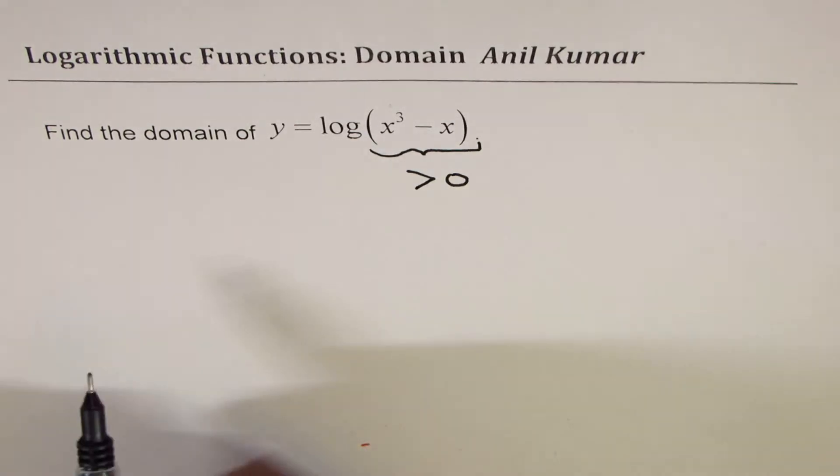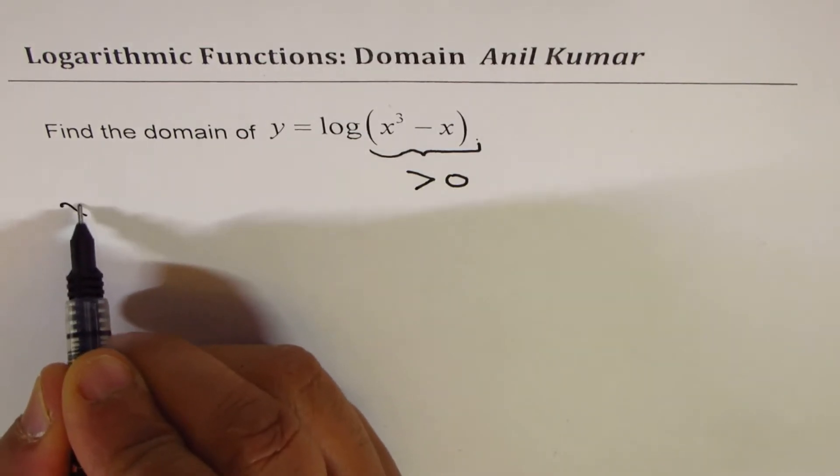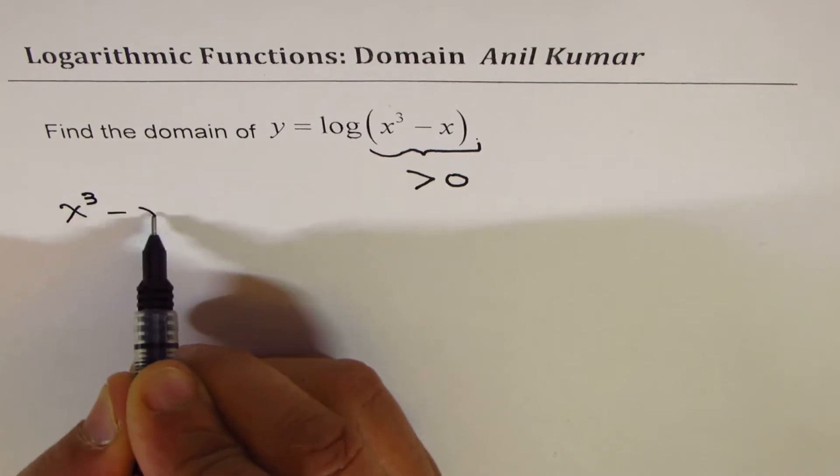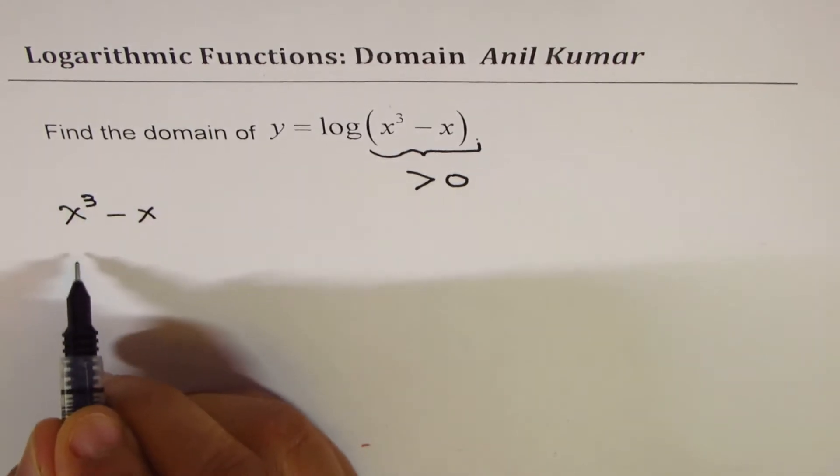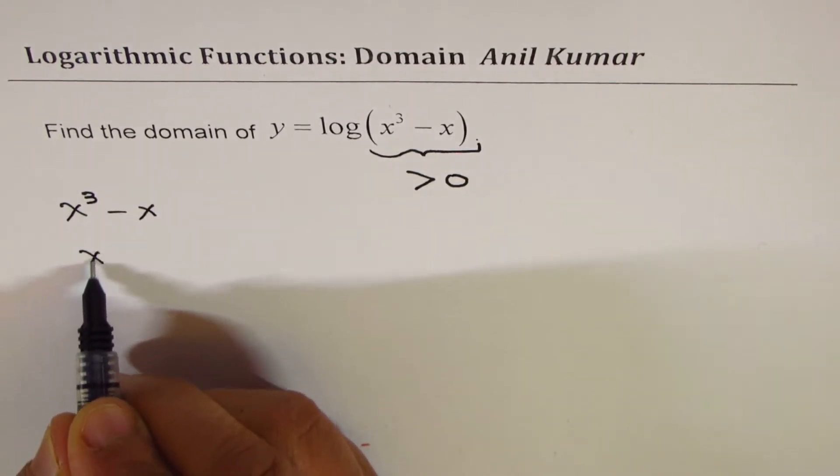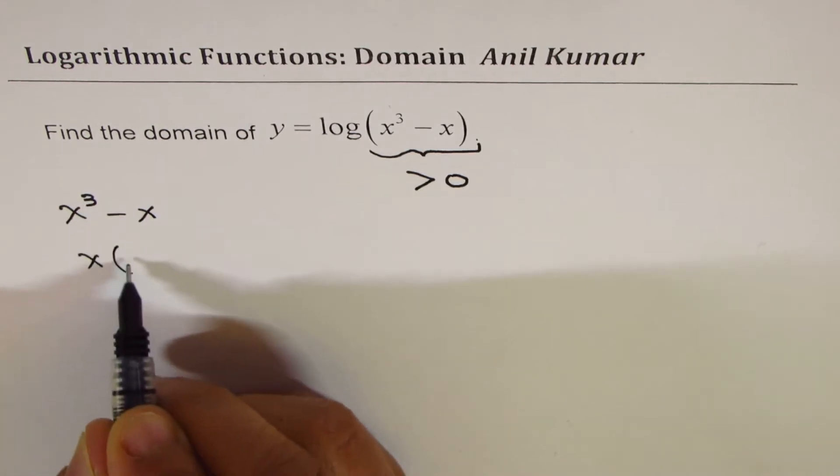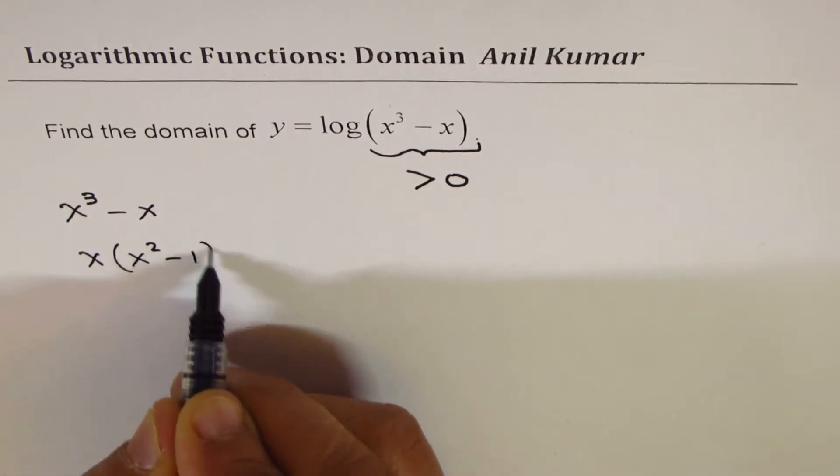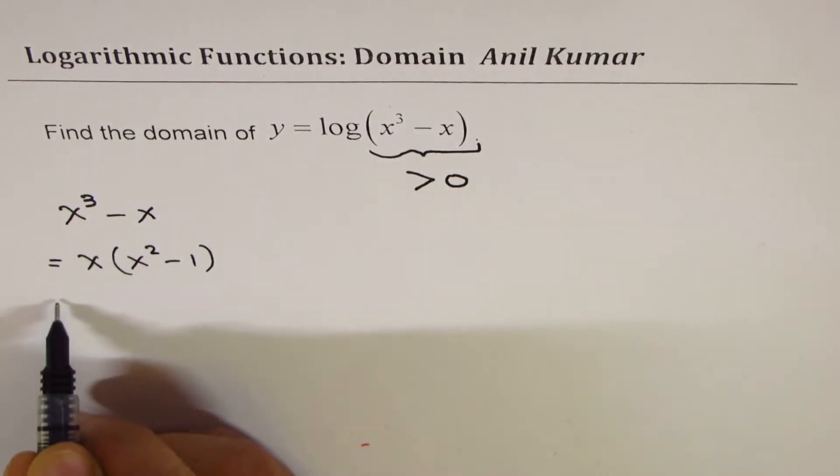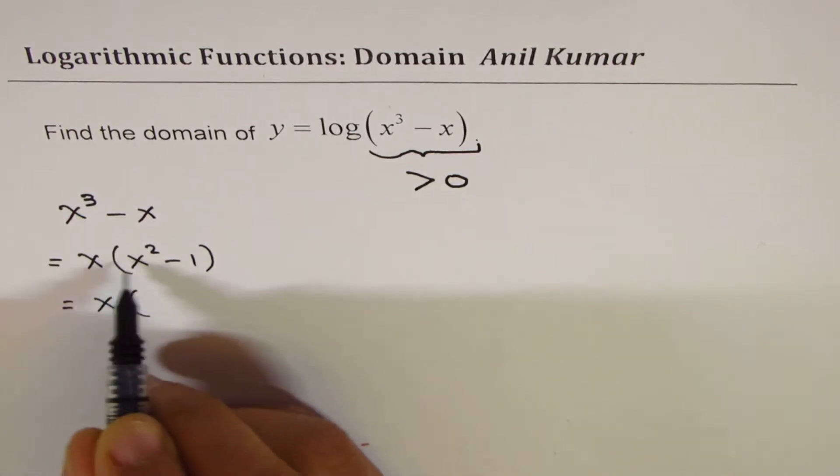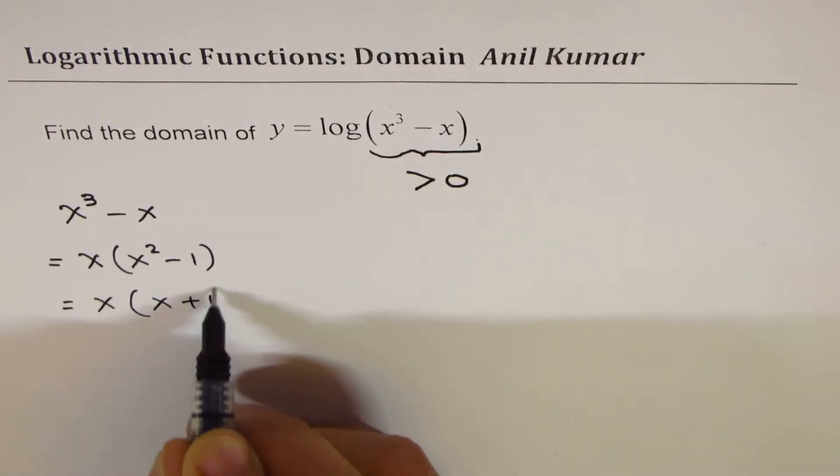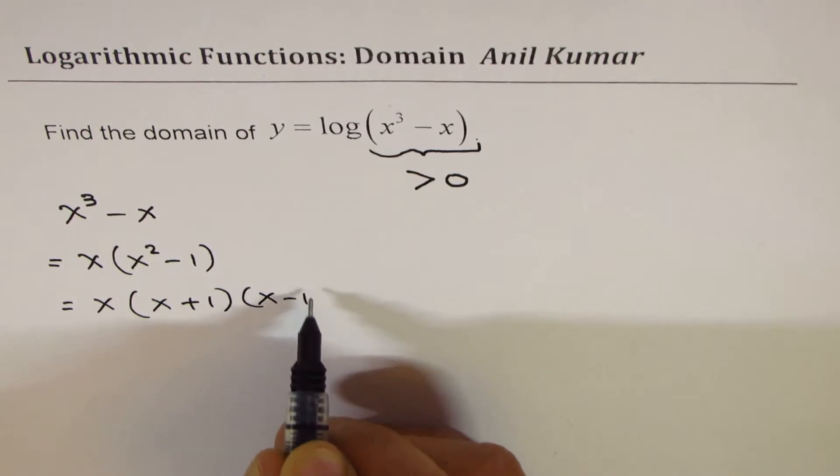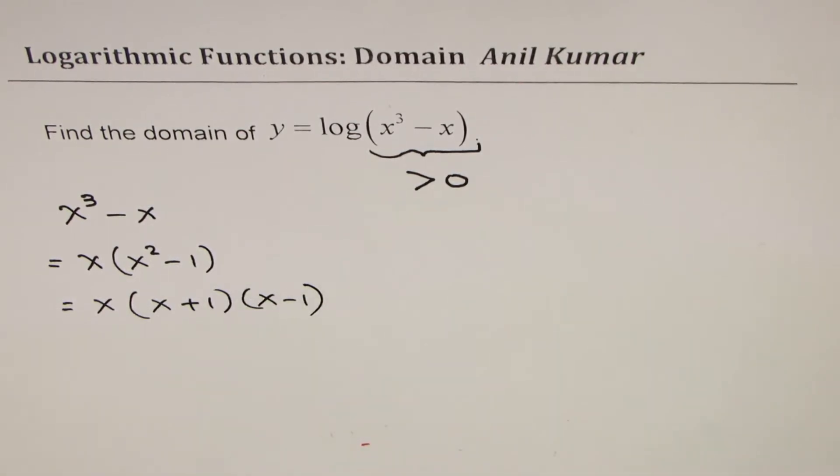So what we are going to do is analyze x³ - x. You could always factor this. You can have x is common, so we get x² - 1. And x² - 1 can also be factored, and we can write this as x(x + 1)(x - 1).